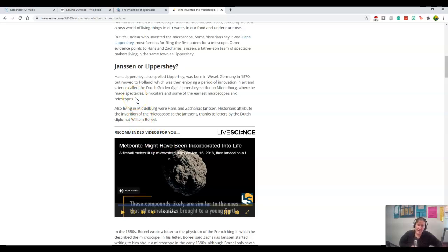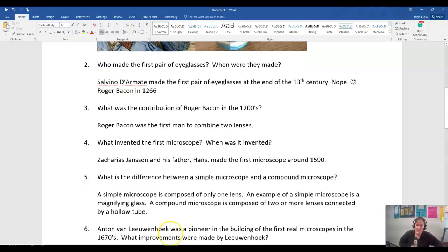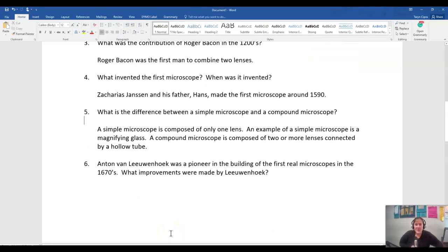There was this other guy, Hans Lipparche, who had been born and raised in Germany, moved to Holland, and had also made spectacles, binoculars, and early microscopes and telescopes. So who really did it? It's hard to say who, and maybe they had just contributed to each other's research because they were in the same region.